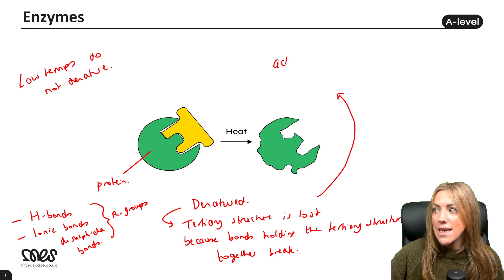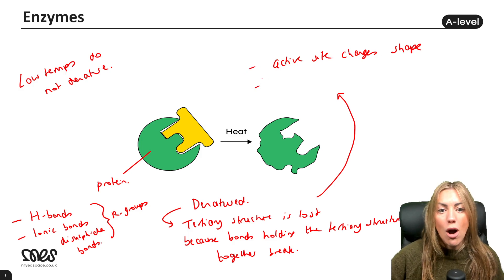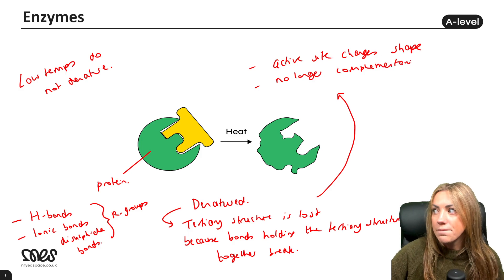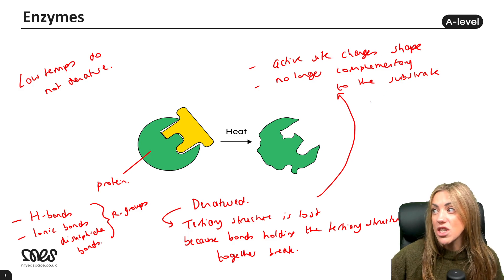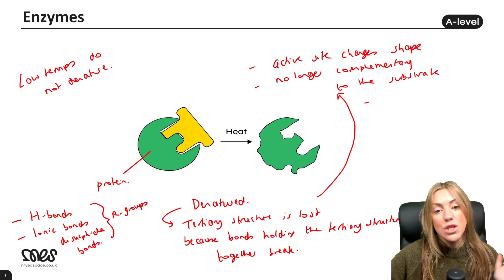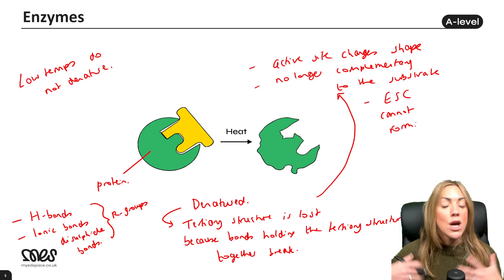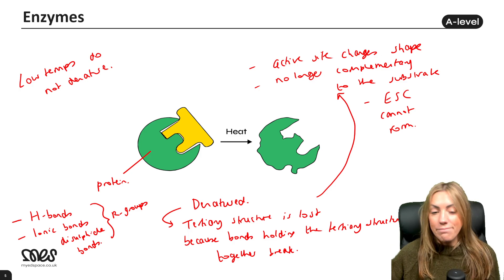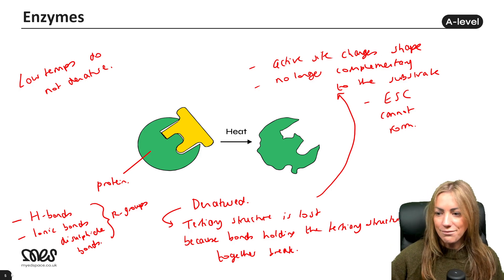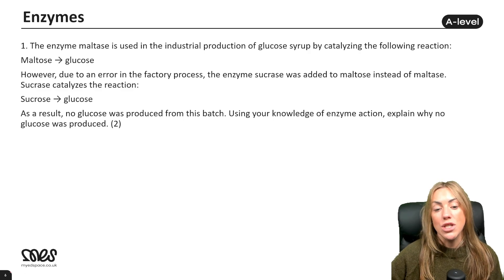Because these bonds break and the tertiary structure is lost, the active site changes shape and is no longer complementary to the substrate. The substrate can no longer bind to the active site, enzyme-substrate complexes cannot form, the reaction won't occur, and the product will not be made — the enzyme has been denatured.